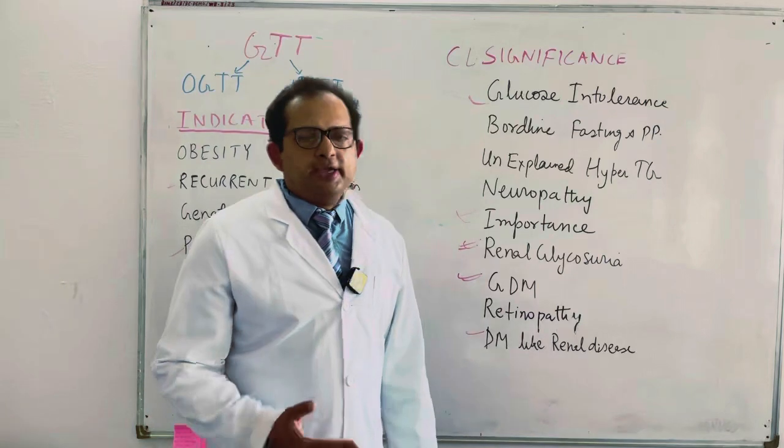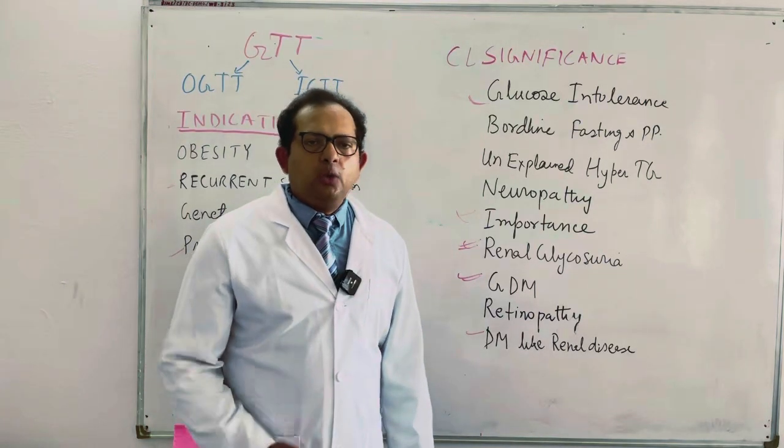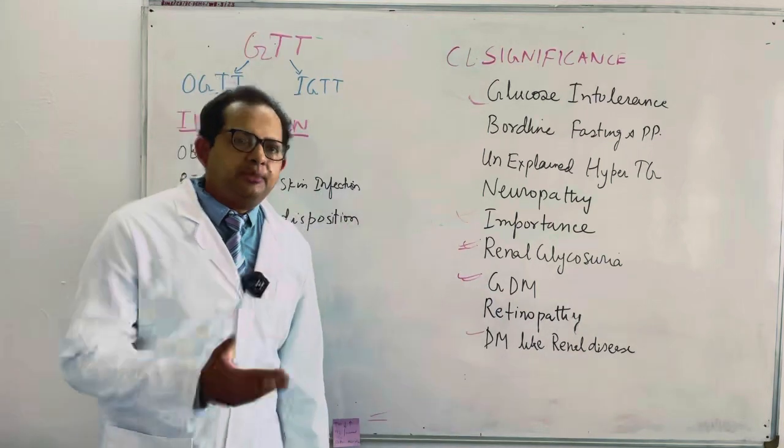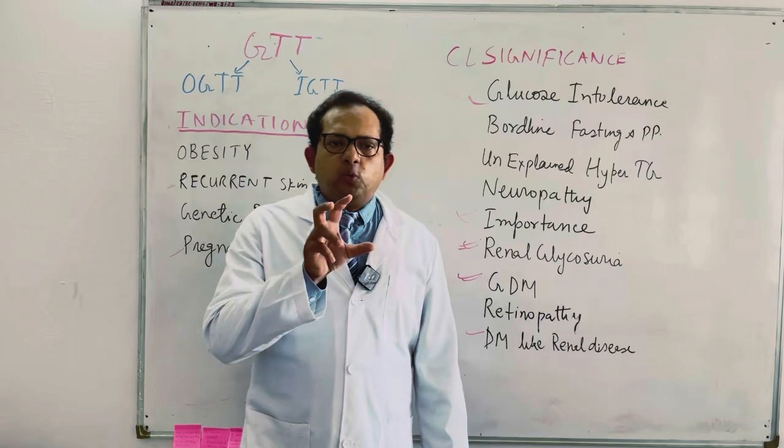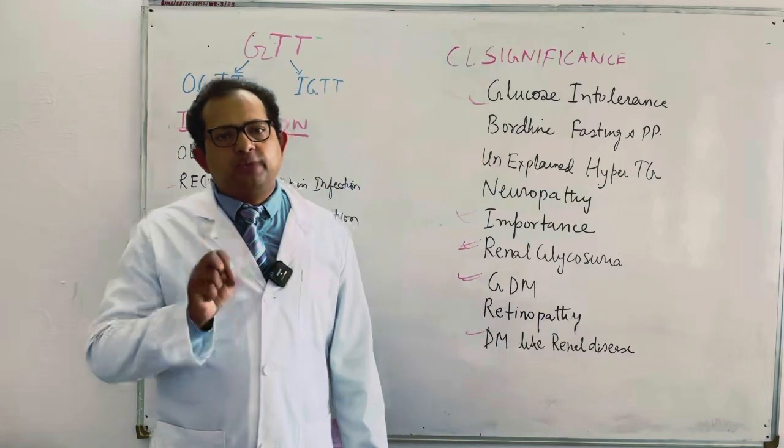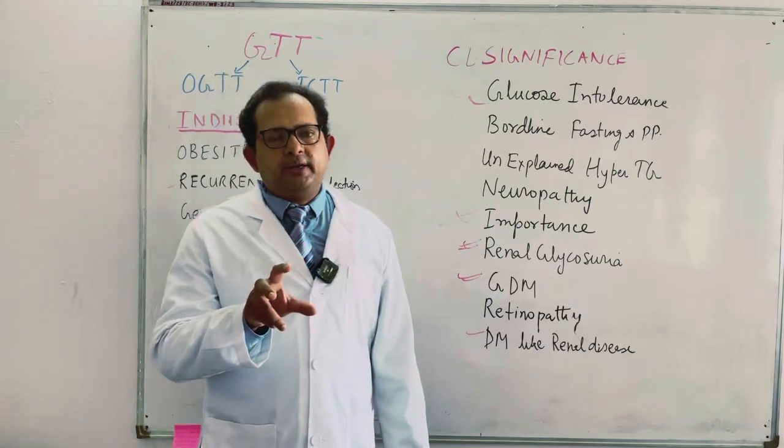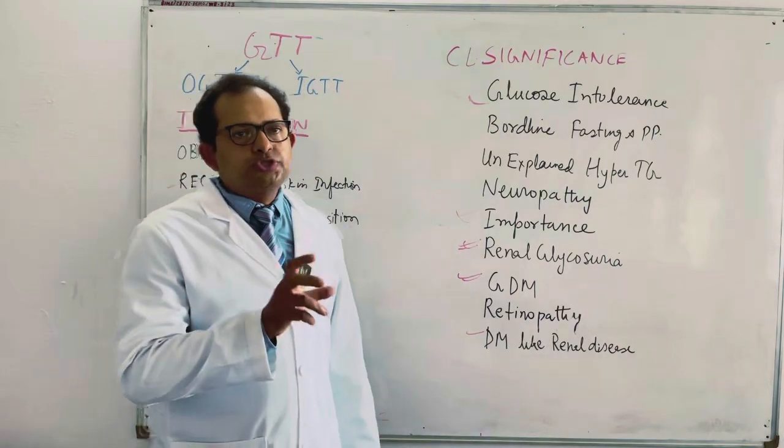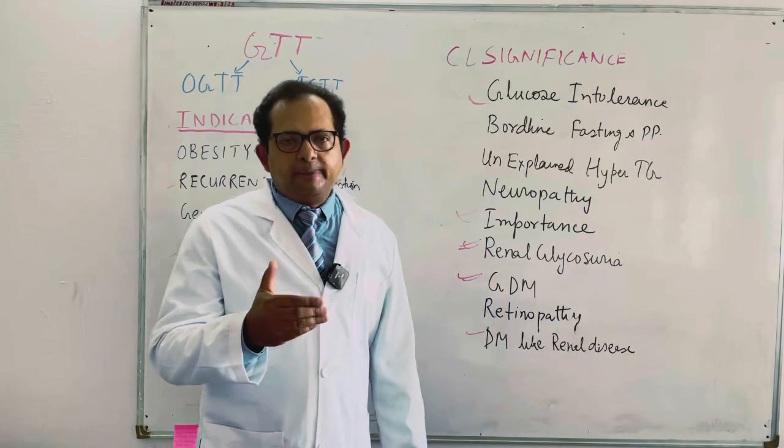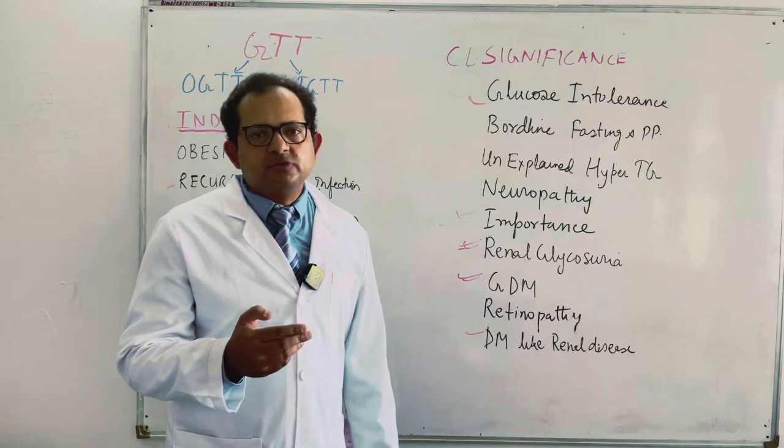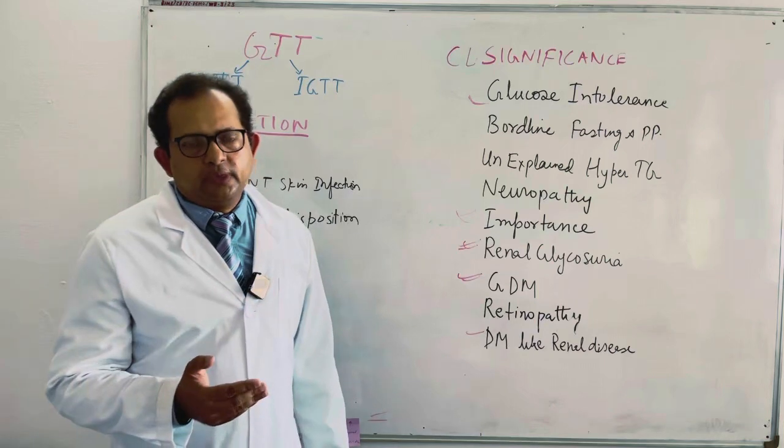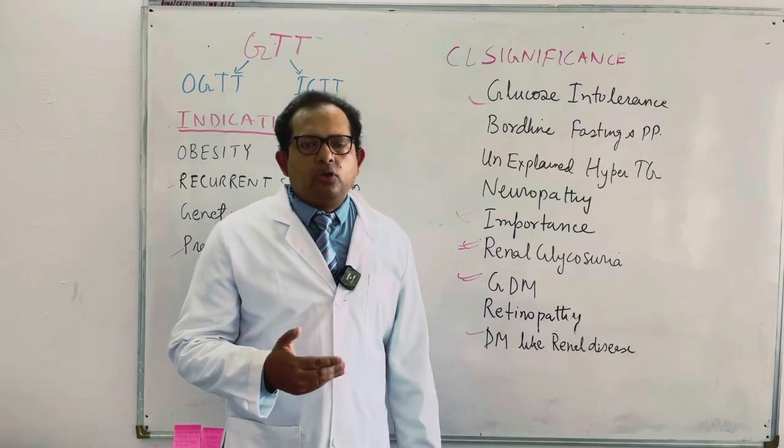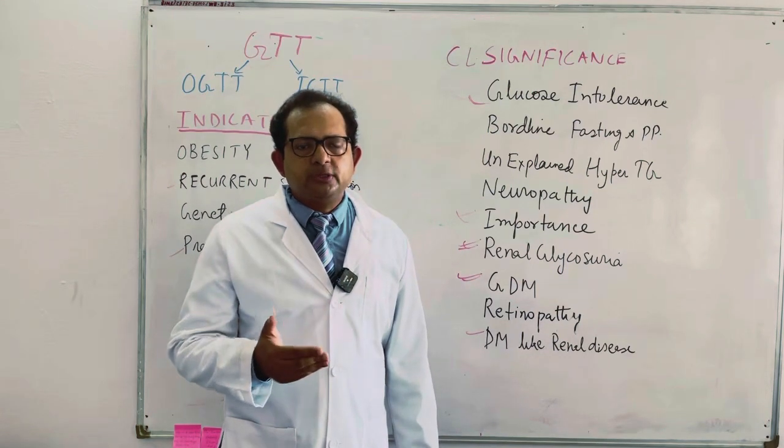So what is the procedure of OGTT? Actually there are two types of procedure which we follow. One is to diagnose the diabetes mellitus and the second is to diagnose gestational diabetes. So you have to keep in mind which type of diagnosis you are going to make. If the patient is non-pregnant female or male and we are suspecting diabetes-related disease, then we will perform the OGTT with two samples: fasting and after two hours of intake of 75 grams of glucose.